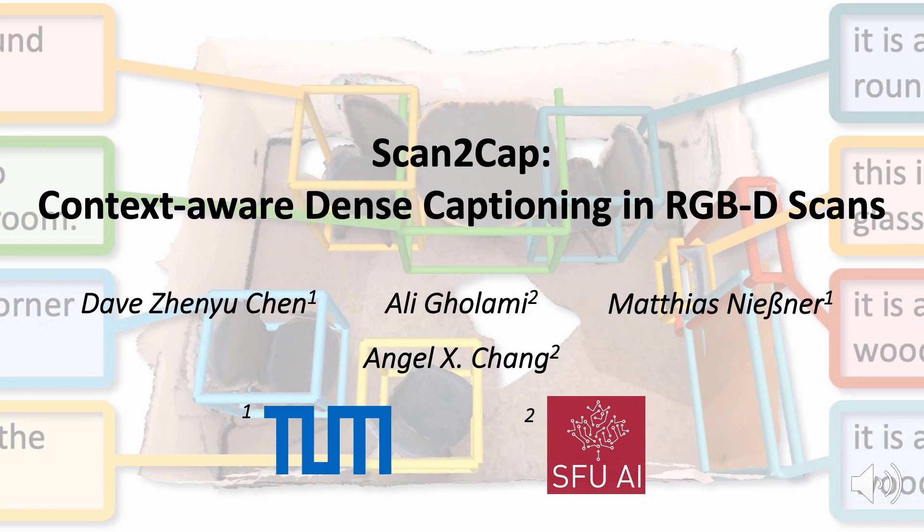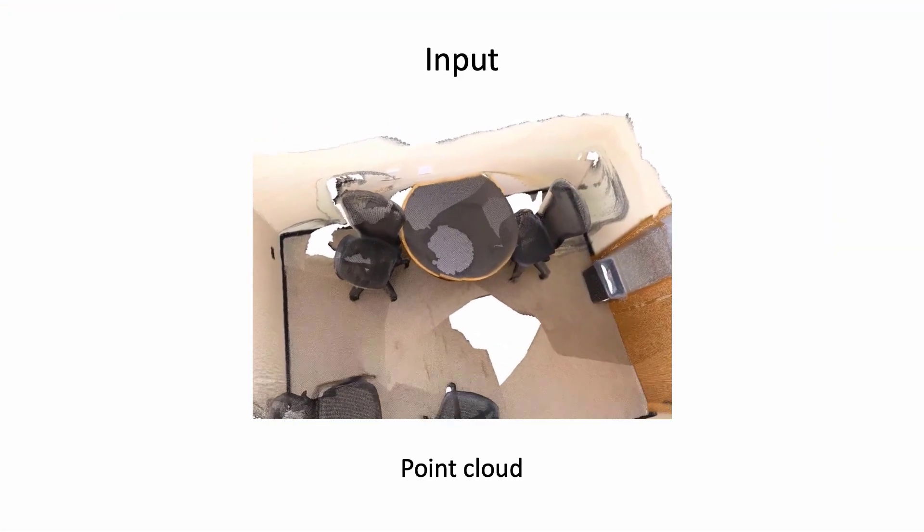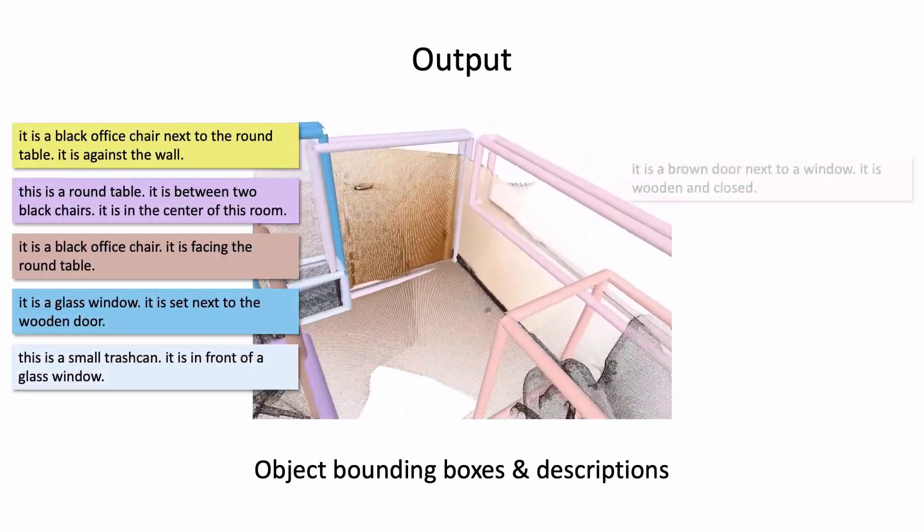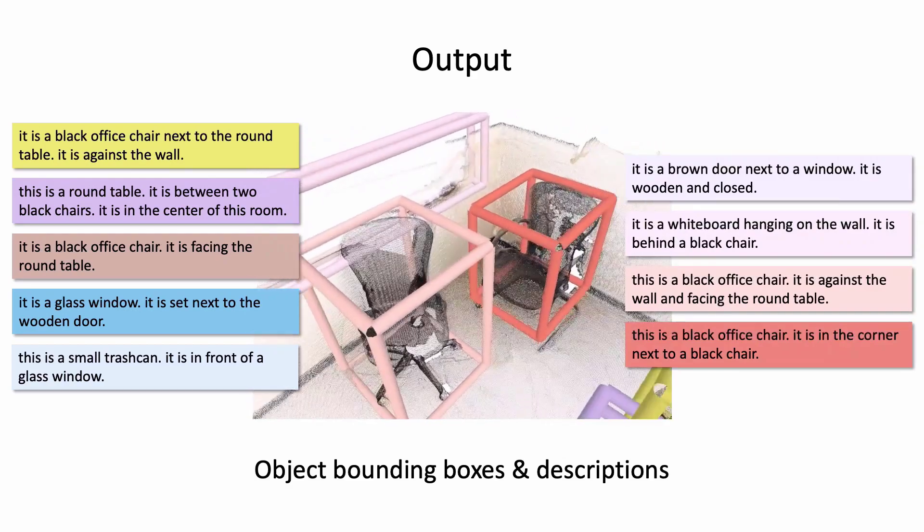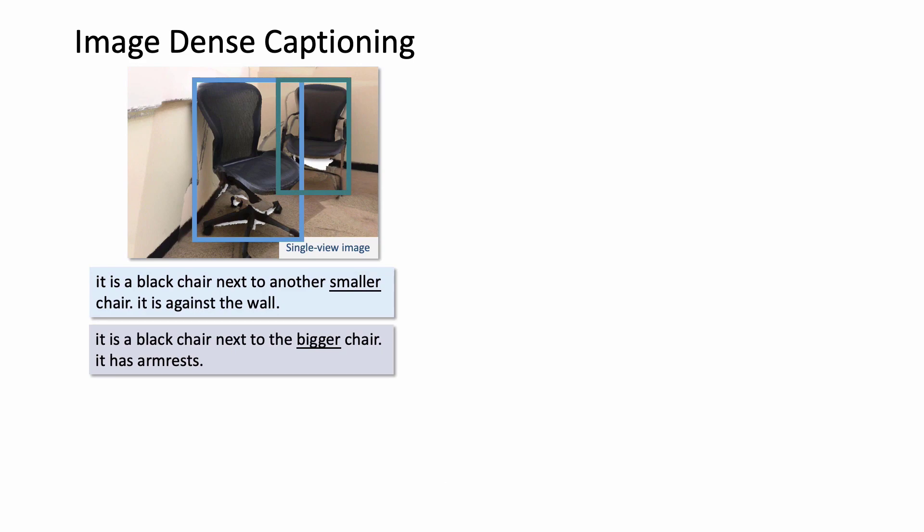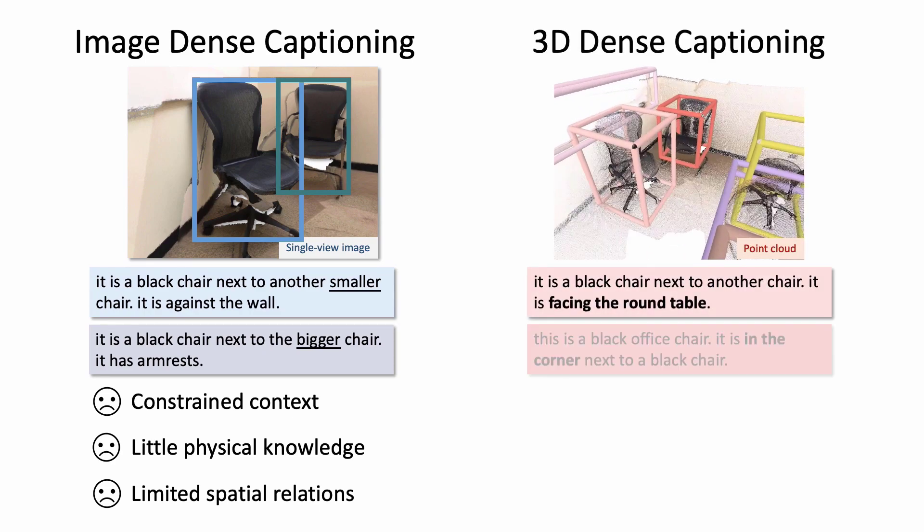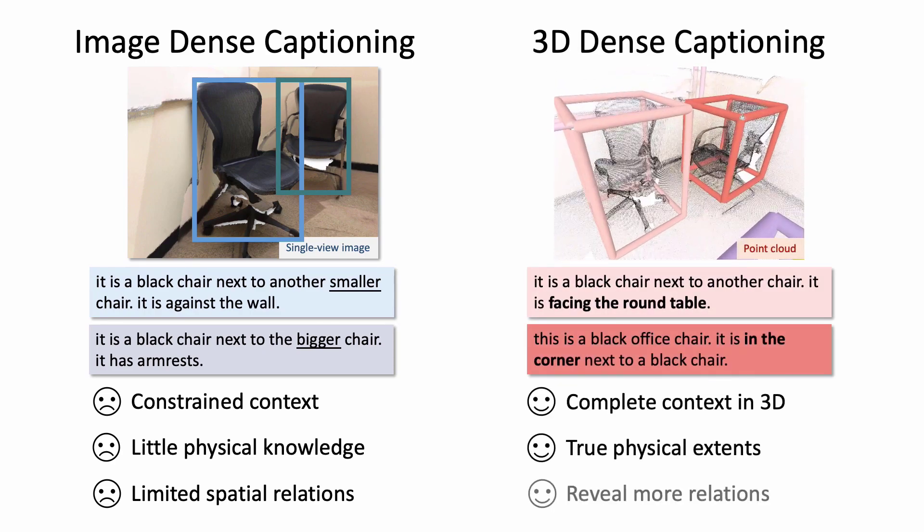We present Scan to Cap, a new method for dense captioning of 3D scans. Given a 3D scene, our goal is to predict 3D bounding boxes for all objects in the scene and infer their corresponding natural language descriptions. The motivation for 3D dense captioning is that performing dense captioning on 2D images is often constrained by the limited field of view. Leveraging 3D information provides a much larger context, and the spatial representation results in much more accurate object descriptions.